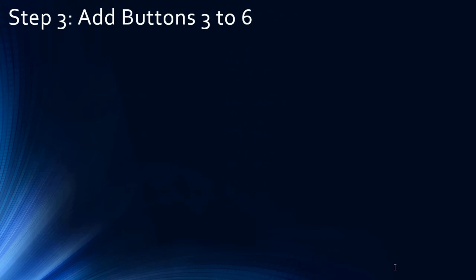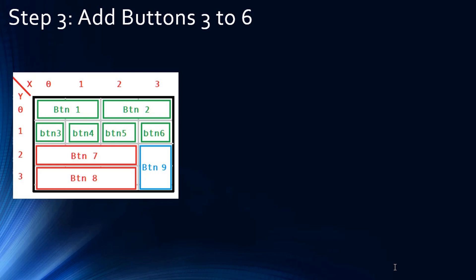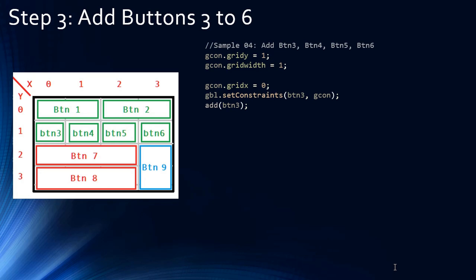Now we move to the next row and add buttons 3 through 6. Looking at the reference picture again, this time we change gridY=1 because we are adding button3 at Y location 1, which is the second row. gridWidth is specified as 1 — previously gridWidth for button1 and button2 was 2, but now it's 1. gridX=0, so button3 is added to the location shown in the picture. For button4, we specify gridX=1 because the next button comes after button3, at X location 1.